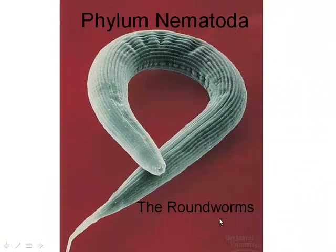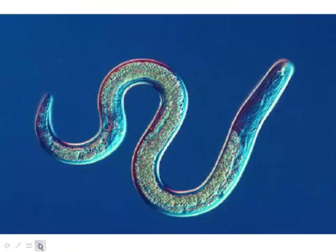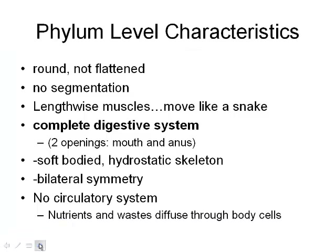Welcome back. We're looking at Animal Kingdom continued — this is Phylum Nematoda, the roundworms. These are the nasty little ones; they are microscopically scary. Here's just an example — this one's not that scary, but it's got that round worm-like structure.